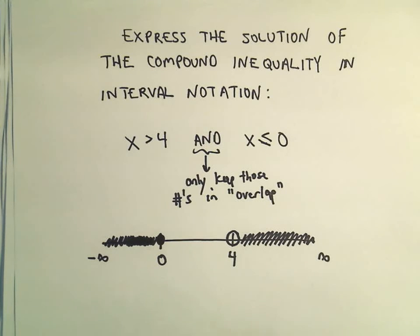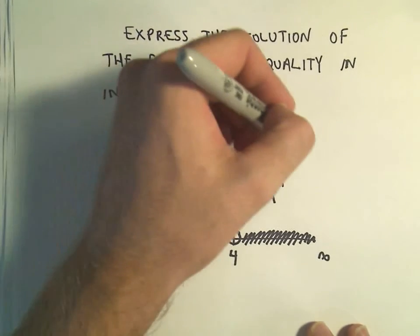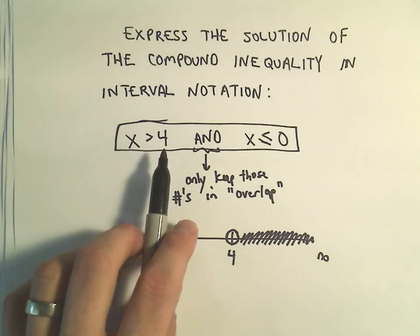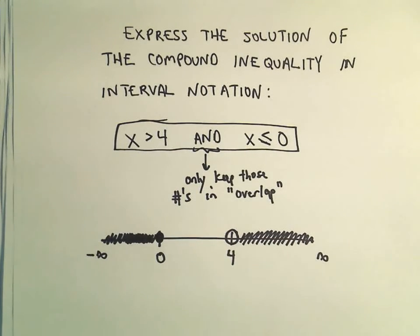So what it means is, it means there are no numbers that satisfy these inequalities. And think about it, what number is bigger than four and at the same time less than zero? Well, there's not any.